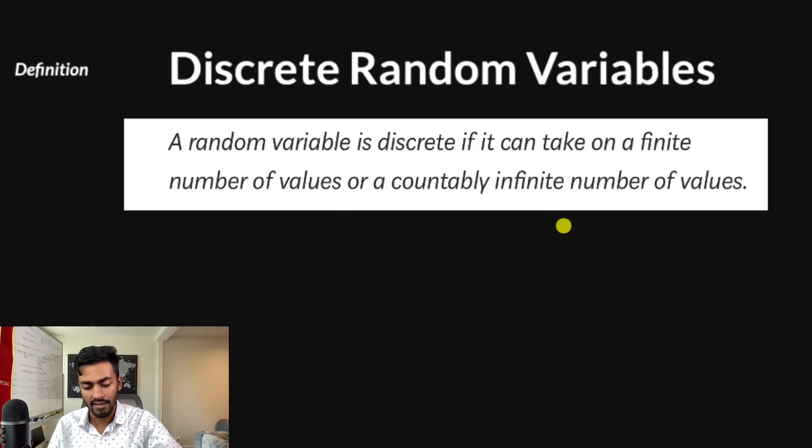Alrighty, so here's a definition that I've taken a screenshot of from one of my blog posts on Medium. So please do check that out. But a random variable is discrete if it can take on a finite number of values or a countably infinite number of values. So some key terms here are random variable, and they can take on a finite number of values or a countably infinite number of values.